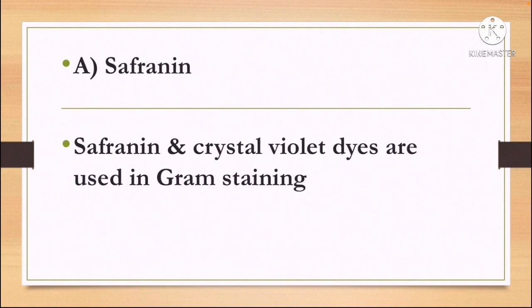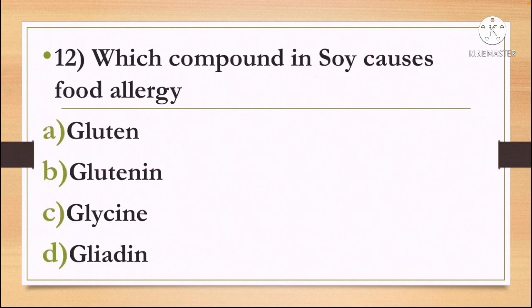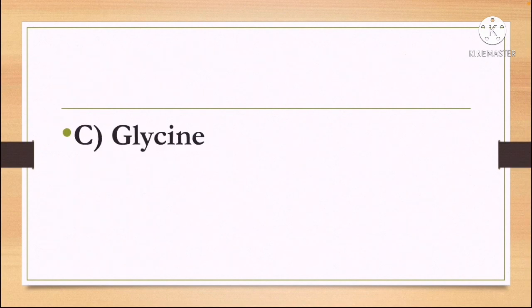Next question: which compound in soya causes food allergy? Option A: Gluten, Option B: Glutenin, Option C: Glycine, and Option D: Gliadin. The correct answer is Option C, Glycine.